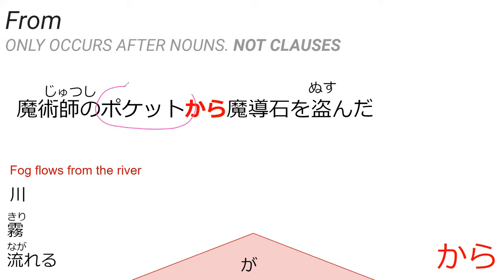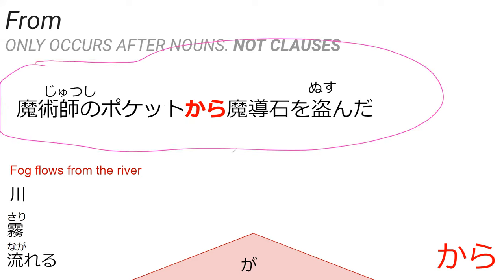Can you read this noun for me first? — Pocket. Yeah, pocket. That just means pocket. Can you read the sentence for me then? — 'Majutsushi no pocket to kara madoseki wo nusunda.' So the subject of the sentence has been dropped again. You can just say Khan for now — pretend Khan did this.